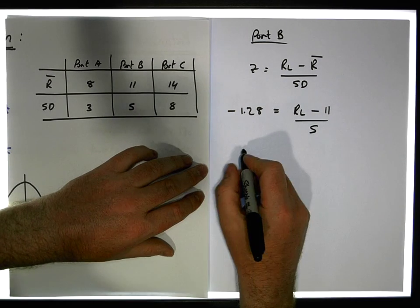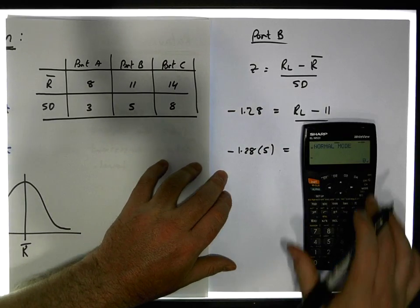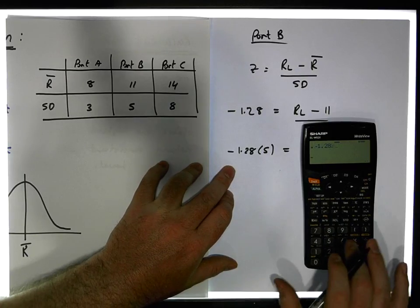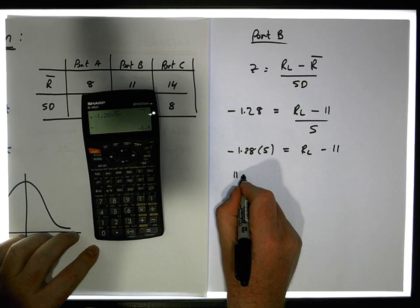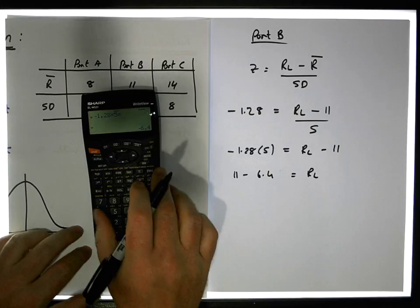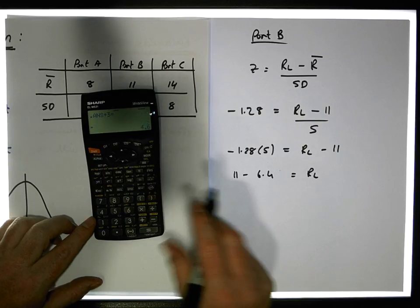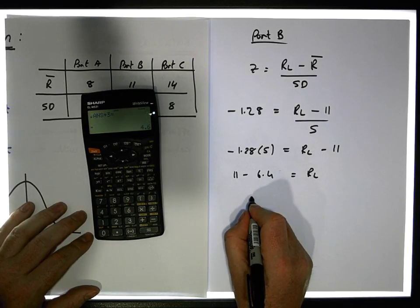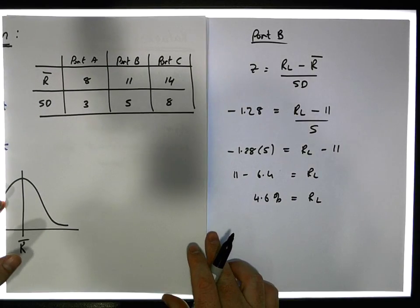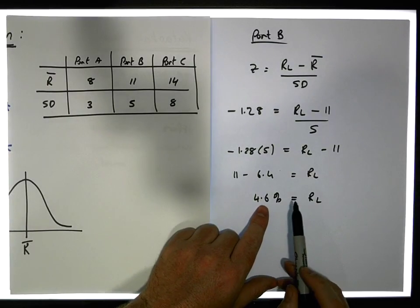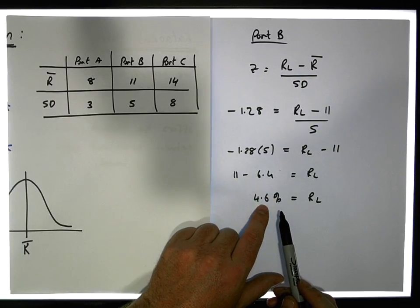Multiplying across by 5 gives us minus 1.28 times 5 equals RL minus 11. That gives us minus 6.4. Bringing the 11 across: 11 minus 6.4 equals RL, so RL equals 4.6%. The minimum return threshold for Portfolio B is 4.6% — that percentage has 10% of the area to the left-hand side of it, meaning we don't want to fall below that level.